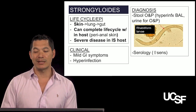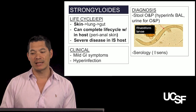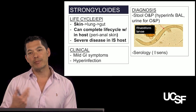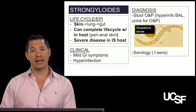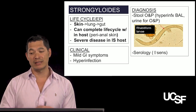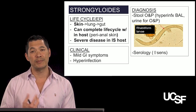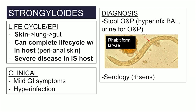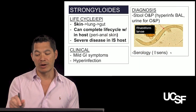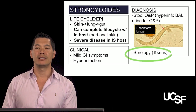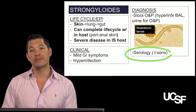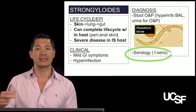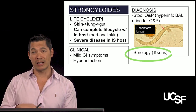You can diagnose it by stool O&P like many of these parasites. But when somebody has hyper-infection syndrome from auto-infection, you can get strongyloides all over the place — on BAL sample, in the urine, in the GI tract. You can see these worms, which make an S-shape — S for strongyloides. Many times we diagnose it through serology, which is pretty sensitive if you haven't reached the stage where parasites are moving all over the body.